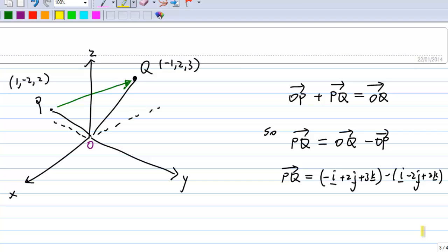But OQ is equal to -i + 2j + 3k, and OP is equal to i - 2j + 2k.